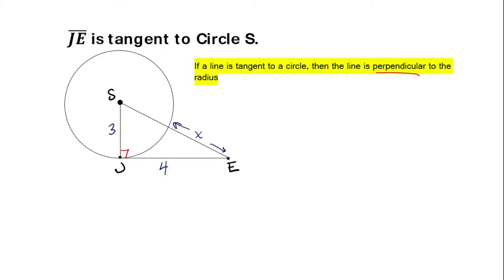All right, so we've got a right triangle, and anytime you're looking for a missing side of a right triangle, you're going to use good old Pythagorean theorem. So Pythagorean theorem is a squared plus b squared equals c squared.